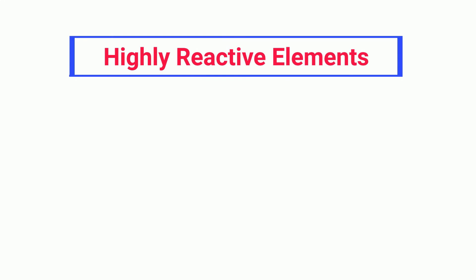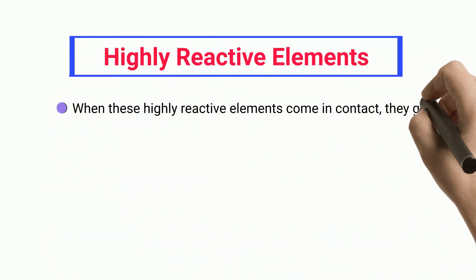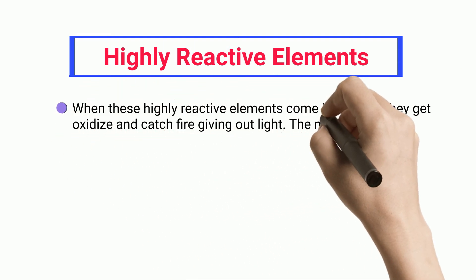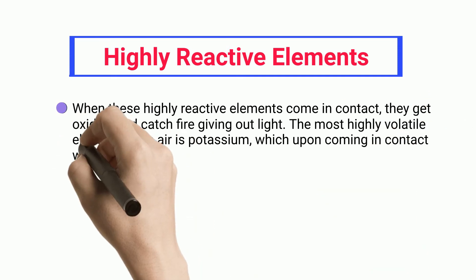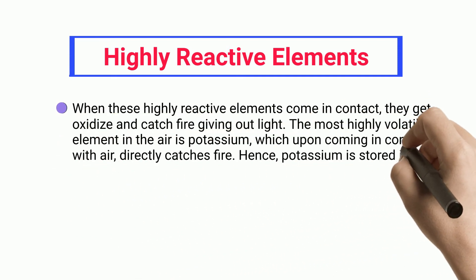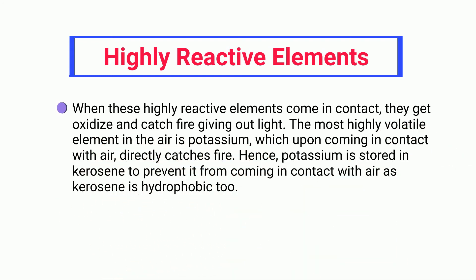Highly Reactive Elements. When these highly reactive elements come in contact, they get oxidized and catch fire giving out light. The most highly volatile element in the air is potassium, which upon coming in contact with air directly catches fire. Hence, potassium is stored in kerosene to prevent it from coming in contact with air as kerosene is hydrophobic too.